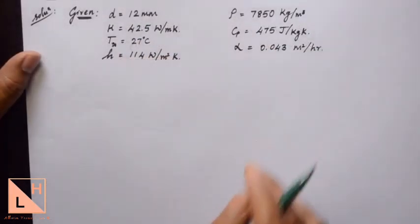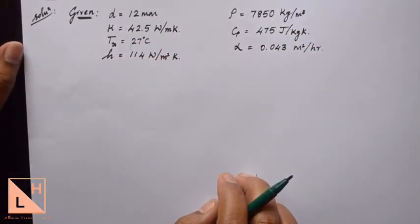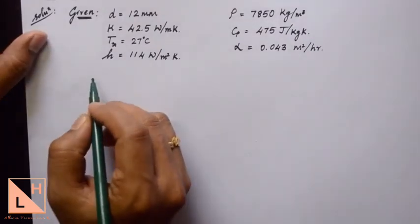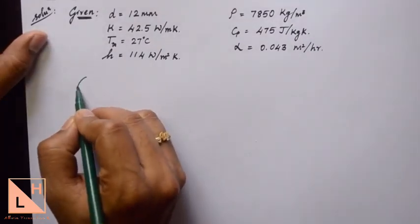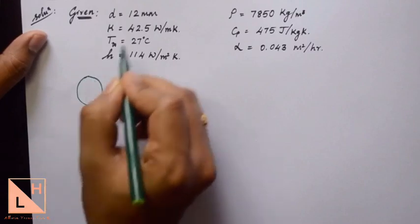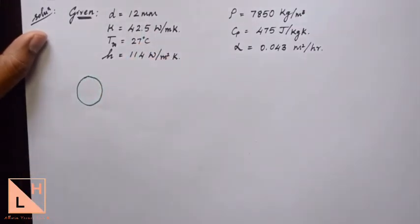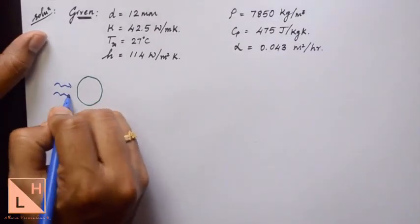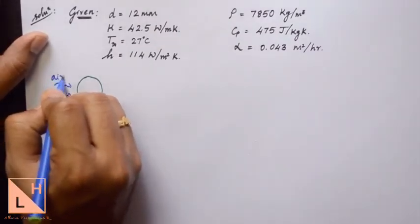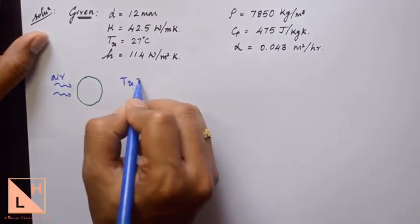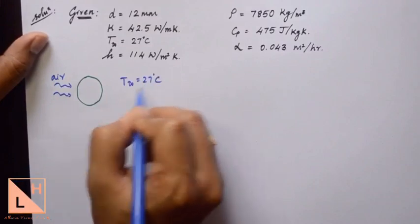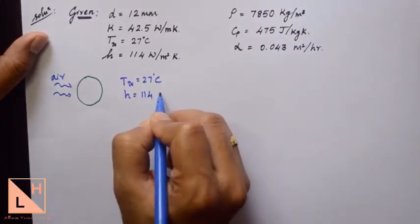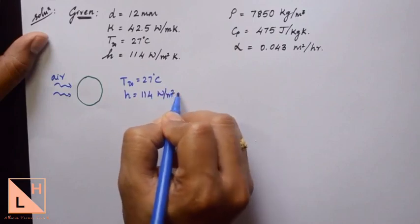Here we have the data taken from the question. A sphere of 12mm diameter is kept in an air stream at T-infinity equal to 27 degrees Celsius, and it has a heat transfer coefficient of 114 watts per meter squared Kelvin.